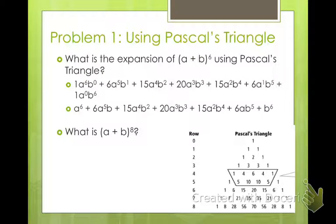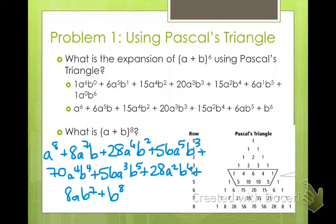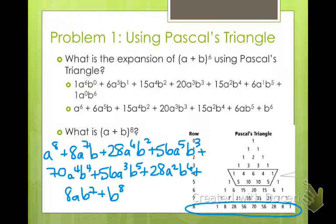Go ahead and pause the video and write out what a plus b raised to the 8th power is. Use your Pascal's triangle to work it out. You should have gotten: a to the 8th plus 8a to the 7th b plus 28a to the 6th b squared plus 56a to the 5th b cubed plus 70a to the 4th b to the 4th plus 56a cubed b to the 5th plus 28a squared b to the 6th plus 8a b to the 7th plus b to the 8th. That comes from the coefficients in the 8th row.